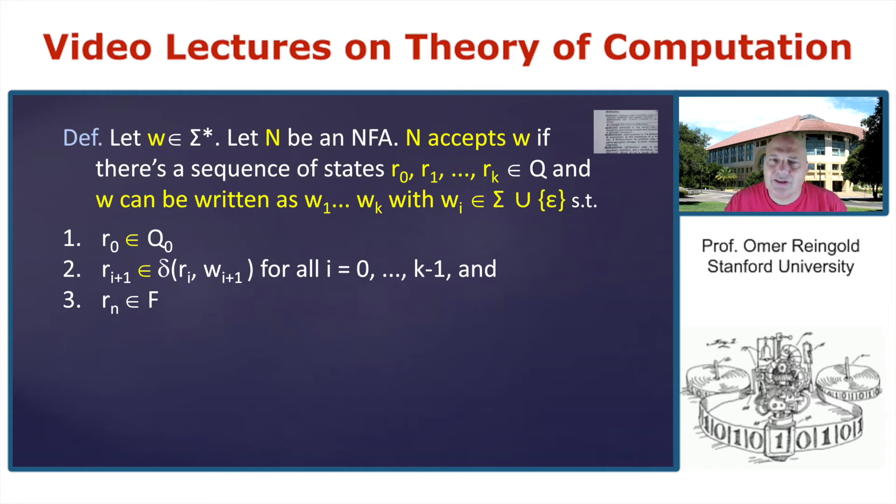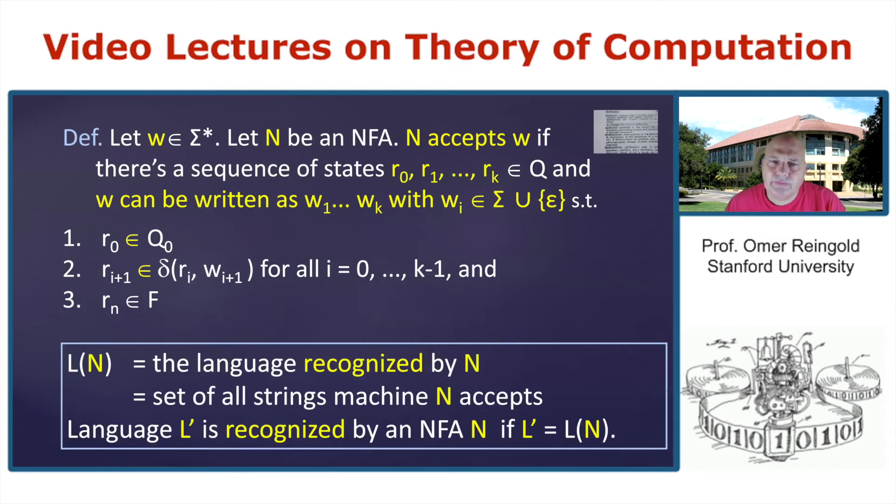And now R_{i+1} is a possible transition from R_i on W_{i+1}. So R_{i+1} is contained in the set of states which you can reach from R_i while reading W_{i+1}. And so it's in delta R_i and W_{i+1}. And this holds for every i from zero to K minus one. So this means exactly what we said in words last time. A string is accepted by N if there exists some accepting path from the start state to an accept state. And now is the language that is recognized by N, which is exactly the set of all strings the machine N accepts. And a language L prime is recognized by an NFA if L prime equals L of N, it's the same terminology we had for DFAs.